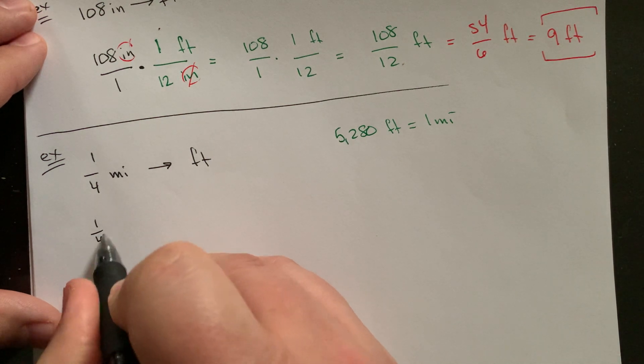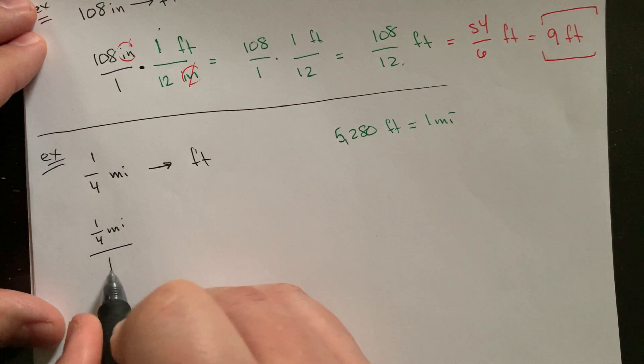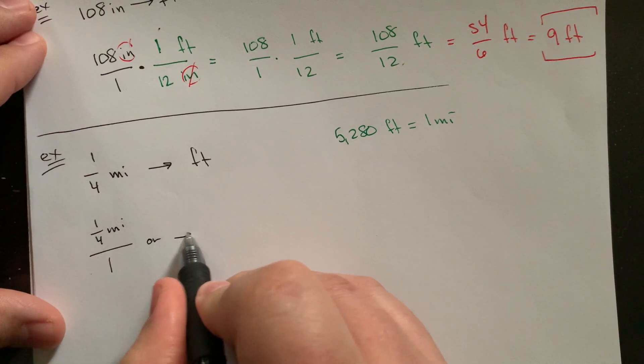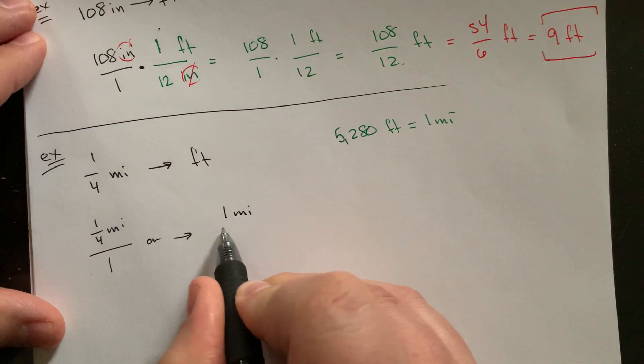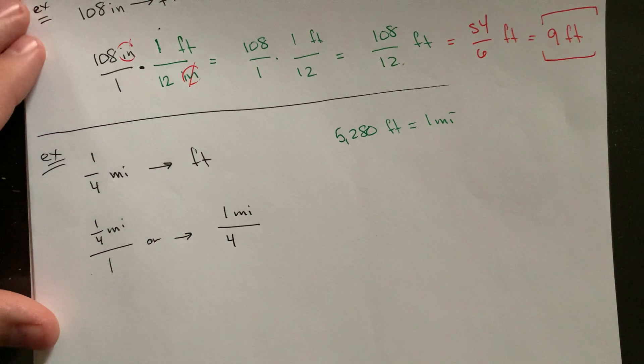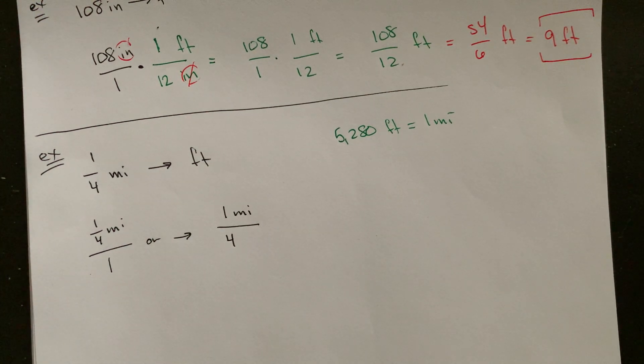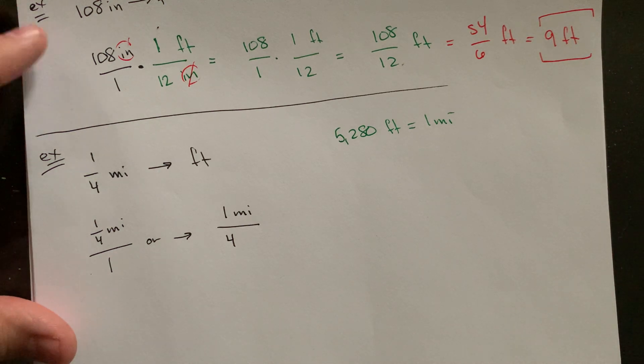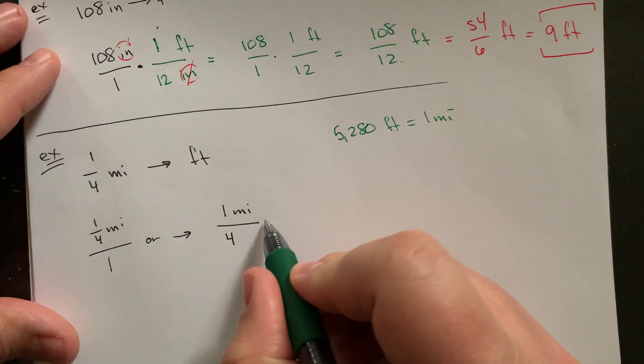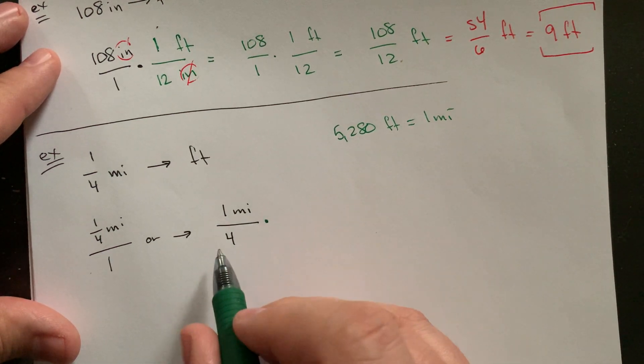So one quarter mile, that would obviously be one quarter mile over one. Or maybe a more obvious way to write it would be, you could actually split it up and write it as one mile over four. That totally works and it's legitimate. You're just keeping the units attached to the top. A quarter mile would be one mile divided by four mathematically. That's consistent and totally fine. I think it just makes this process a little bit easier and the setup a little easier.